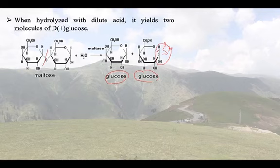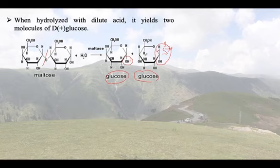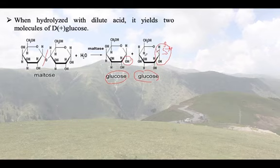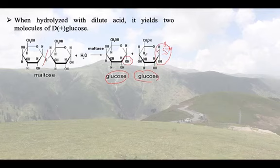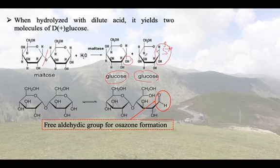At least one of the two anomeric groups is free and the second one may or may not be free. The linkage is created by the anomeric carbon of one glucose and another carbon of the second glucose. If the hydroxy group is at carbon one, we say it is an anomeric linkage; if at carbon two, it is an alpha-1,2 linkage — the number indicates which carbon the hydroxy group is attached to.